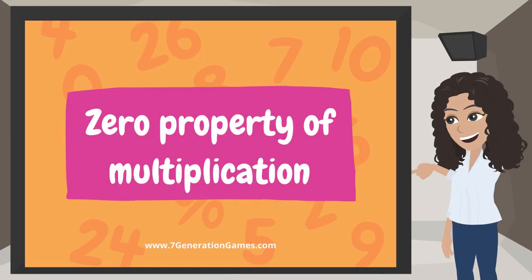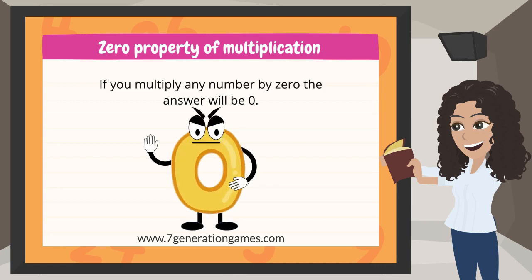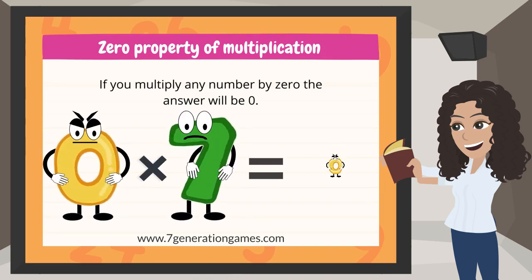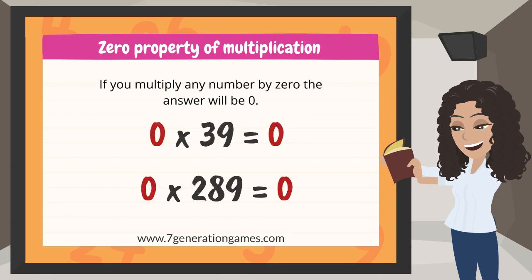Zero Property of Multiplication: if you multiply any number by 0, the answer will be 0. Think of the number 0 as a mean number — when any number is multiplied by 0, it doesn't let any other number be the product or result. For example, 0 times 7 equals 0, 0 times 39 equals 0, and 0 times 289 equals 0.